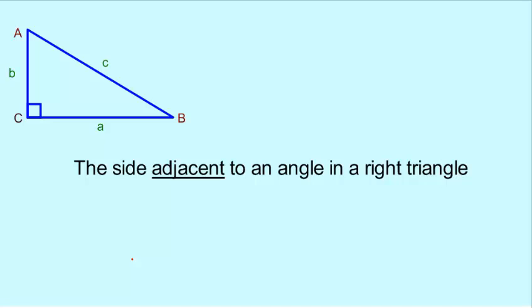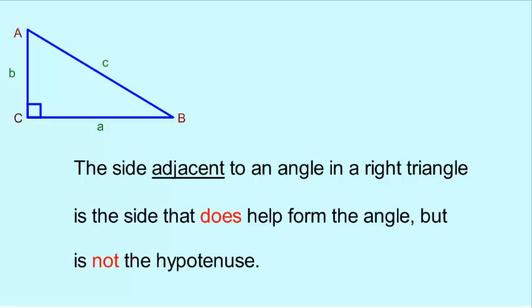So we've talked opposites, we've talked hypotenuse. The side adjacent to an angle in a right triangle is the side that does help form the angle, but is not the hypotenuse.